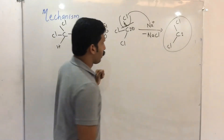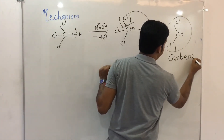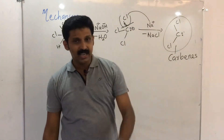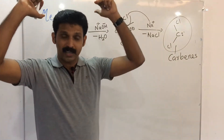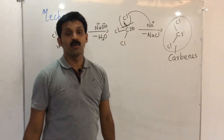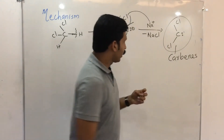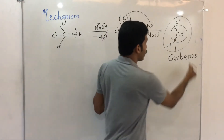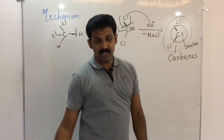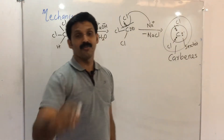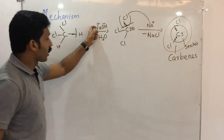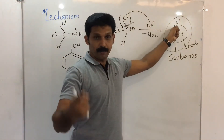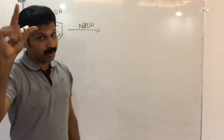This species is called a carbene. Carbene is a species in which the carbon atom has one lone pair of electrons but does not have a full octet — it has a sextet configuration. Sextet configuration means it is an electron-deficient species. Therefore, this carbene can act as an electrophile. Step 1 is the formation of carbene — dichlorocarbene.